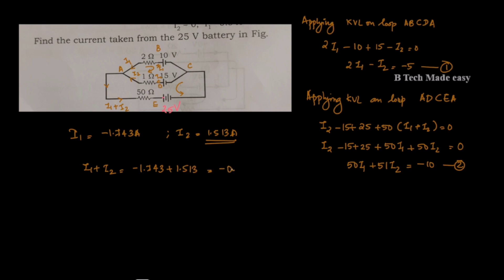The result is minus 0.23 Amperes. This negative sign indicates that the actual direction of the current is opposite to the assumed direction.